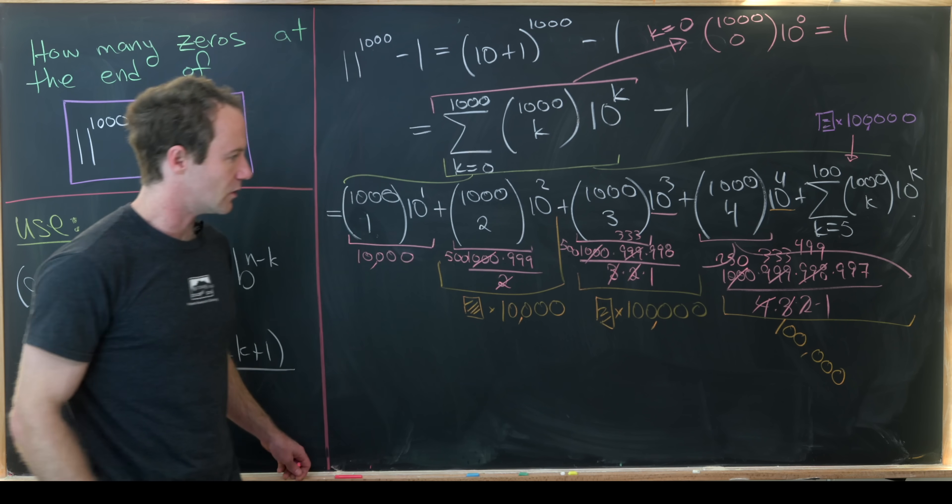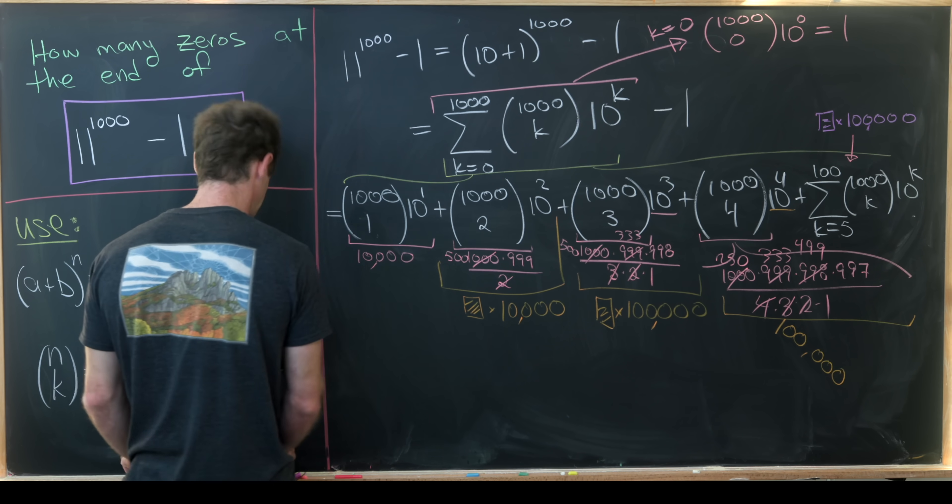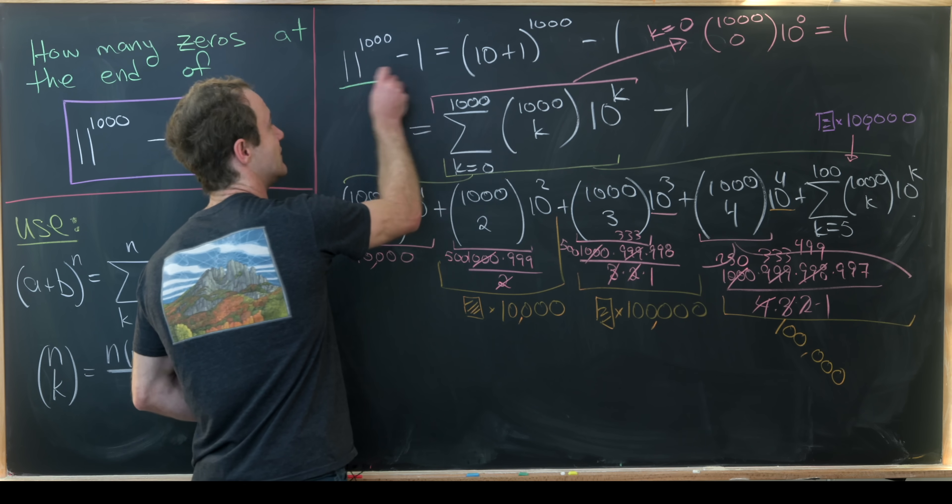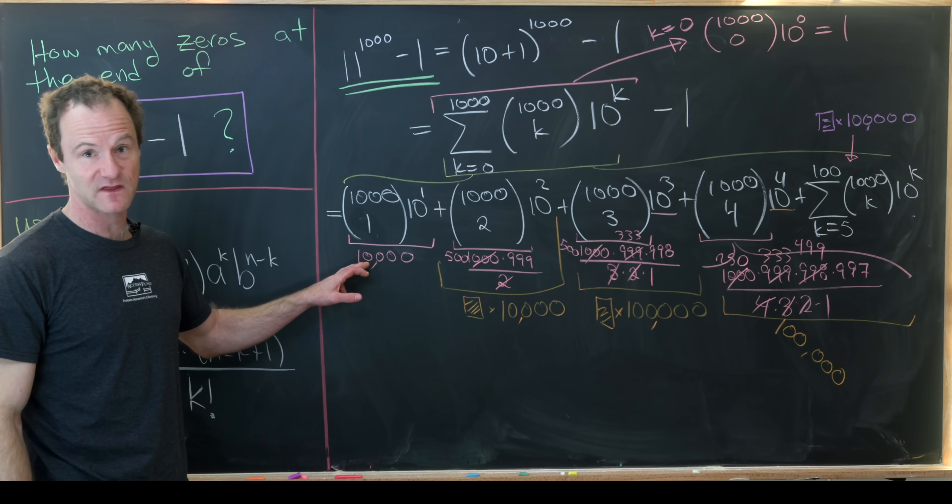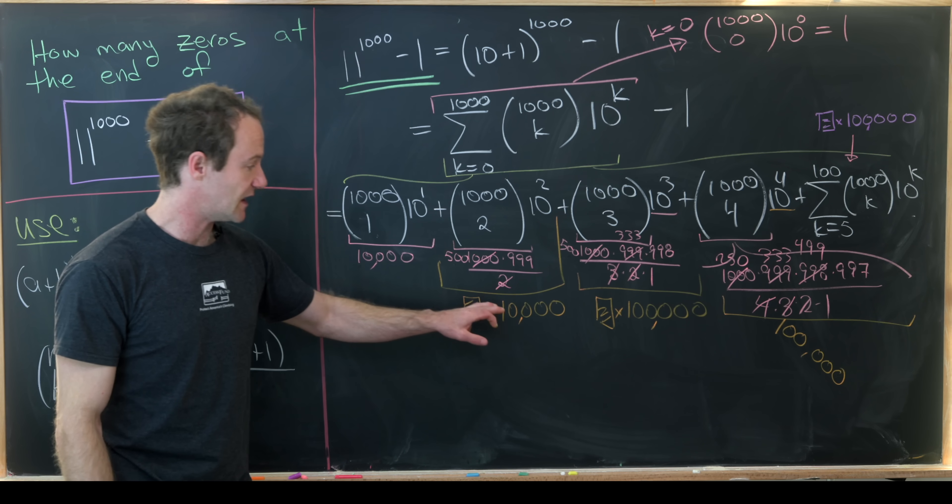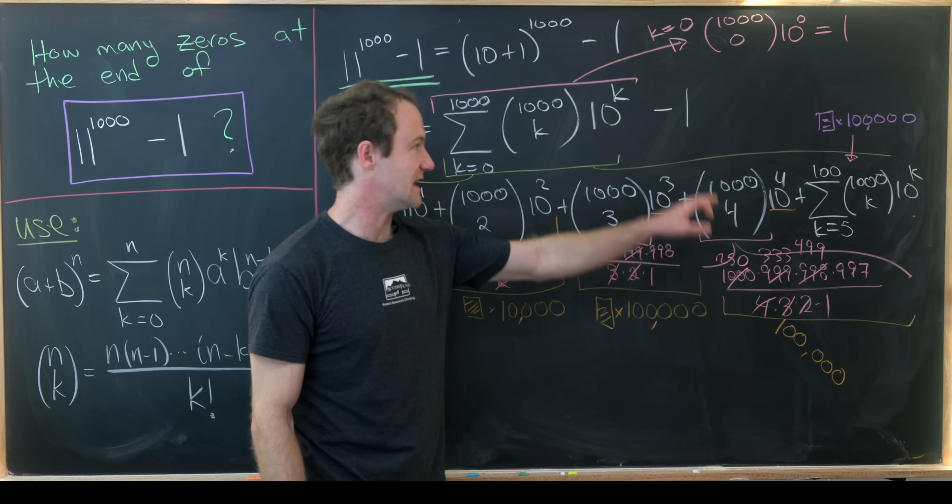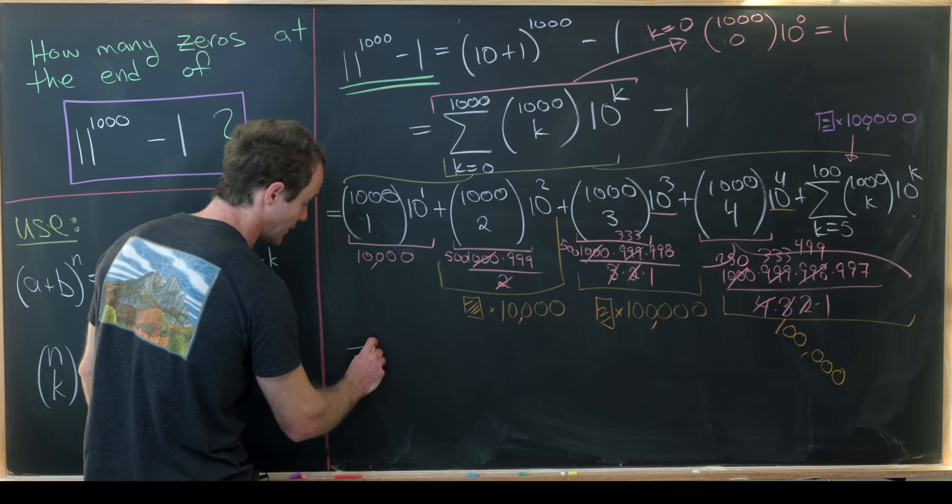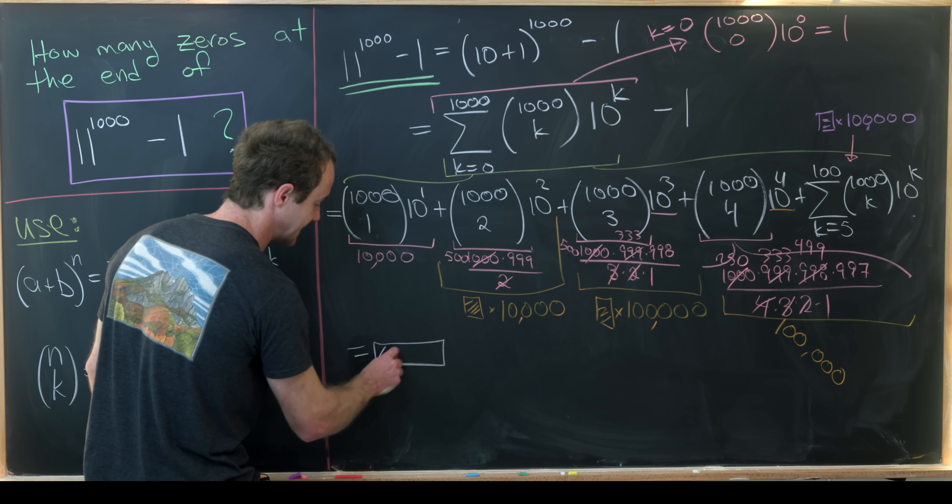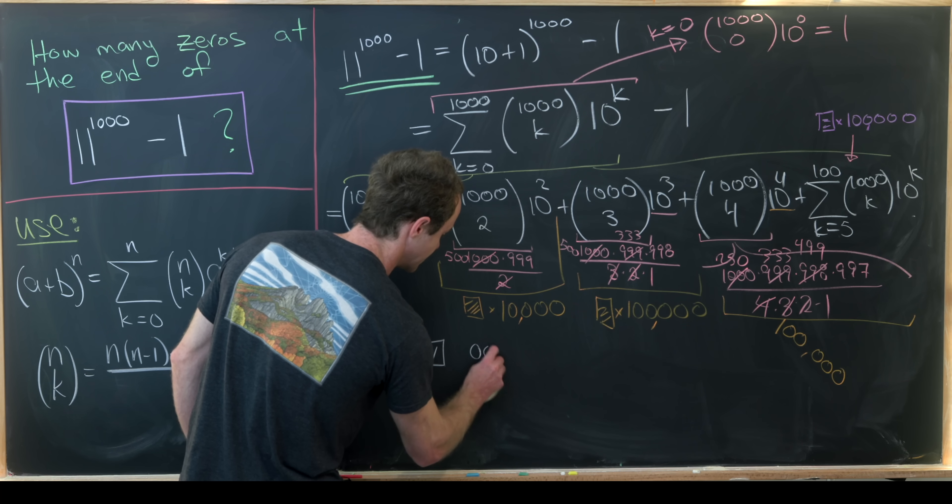Okay so let's maybe summarize what we have. Our number which is 11 to the 1,000 minus 1 can be written as a sum of 10,000 and then a number that ends in four zeros and then numbers that end in five zeros. So that means in the end we know that our final number has a bunch of leading digits and then it must end in four zeros.